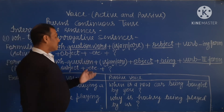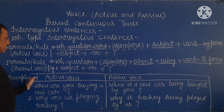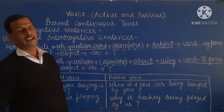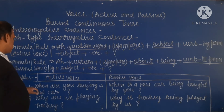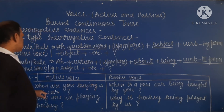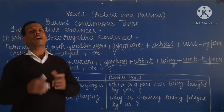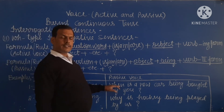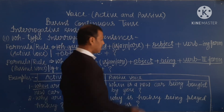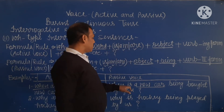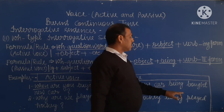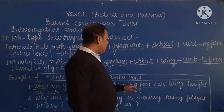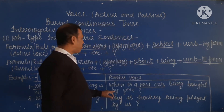Here is the third example to clarify these rules. The first example is: 'When are you buying a new car?' In passive voice, 'a new car' is the object, which is singular, so we write 'is'. Then 'being', then the third form 'bought', then 'by you', and a question mark. So the passive voice is: 'When is a new car being bought by you?'